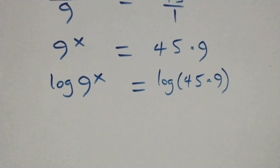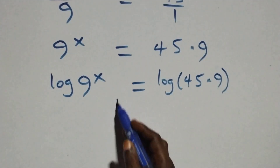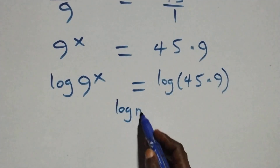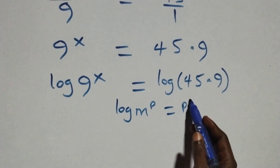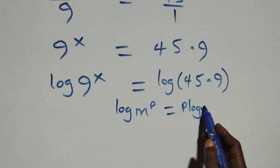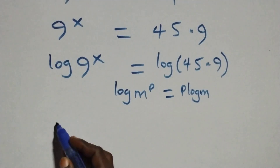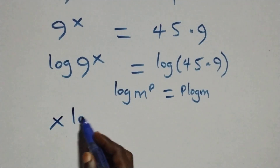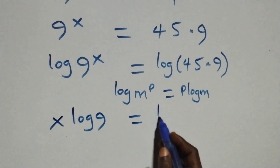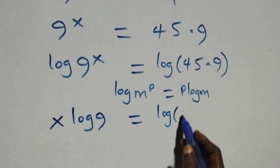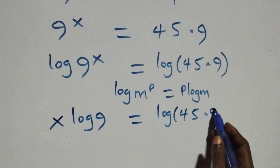We apply the power rule of logarithms: when we have log m raised to power p, this is the same thing as p log m. So this becomes x log 9 equals log of 45 times 9.